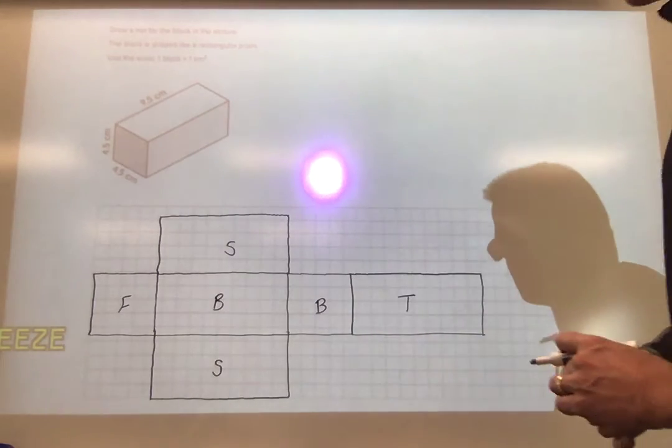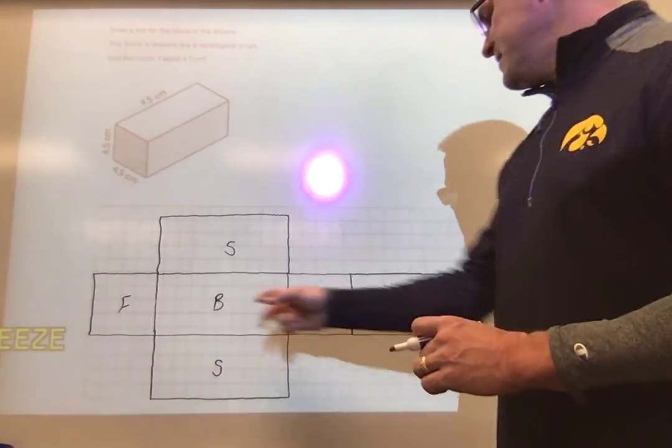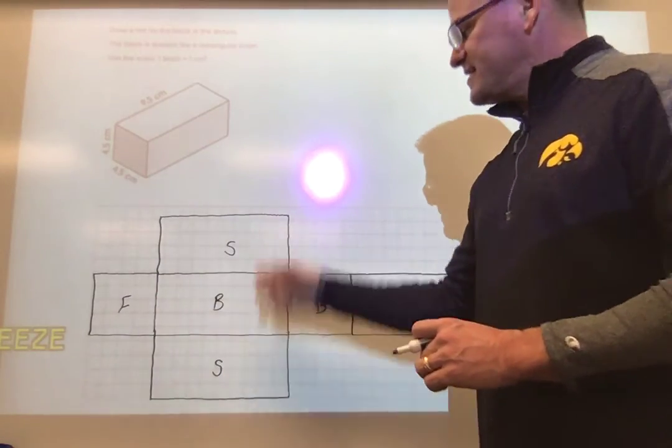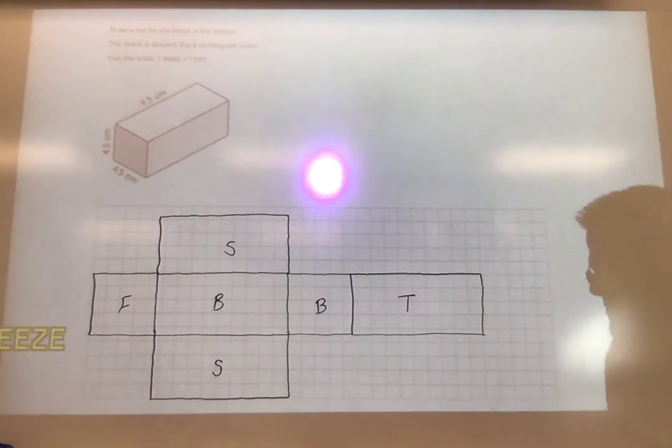Then you should see the six faces again - the top and the bottom and the front and the back and the two sides. You'll see all six of those, so you should have six faces when you're done.